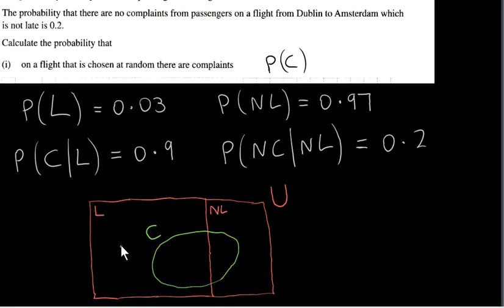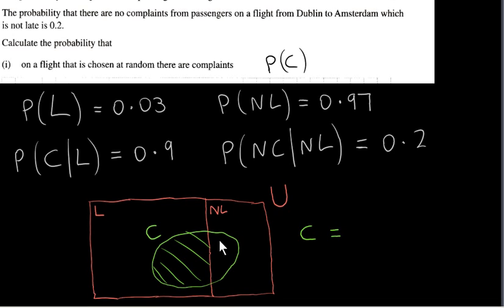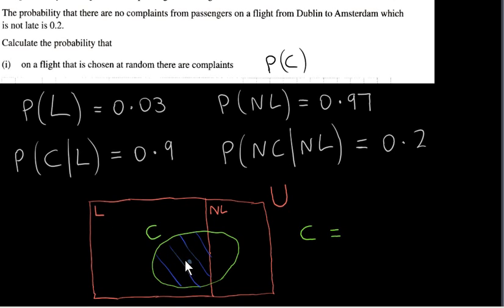You can imagine an element of set U, represented by a dot, as a flight from Dublin to Amsterdam. If the dot is here, we're talking about a flight for which there were complaints and which is also late. Now we can think of the set C as the union of two disjoint sets. This blue set is the intersection of C and L — any point in here represents a flight for which there were complaints and this flight is also late.